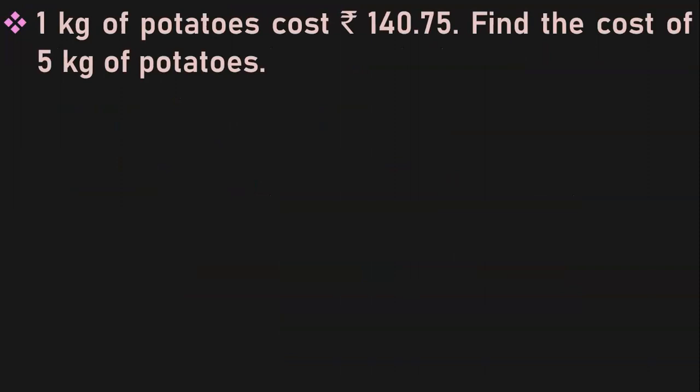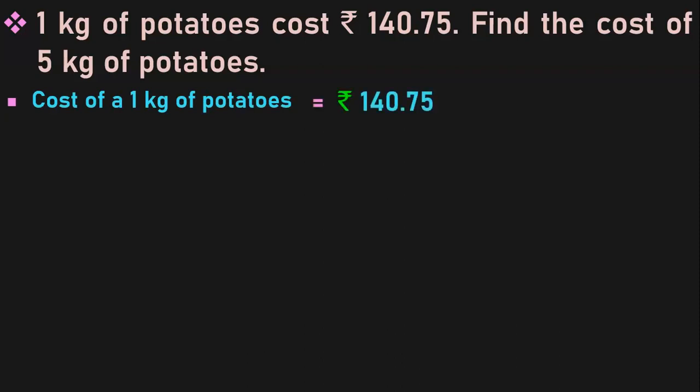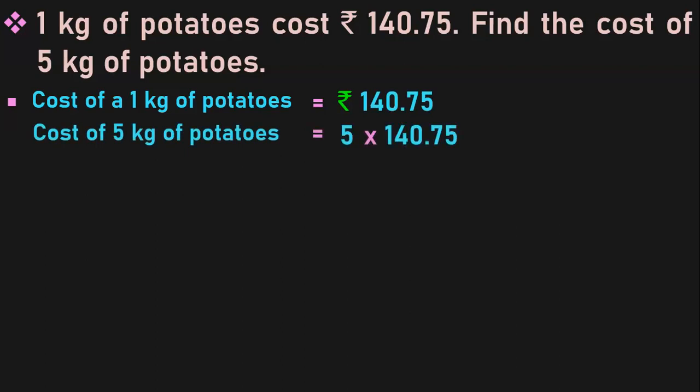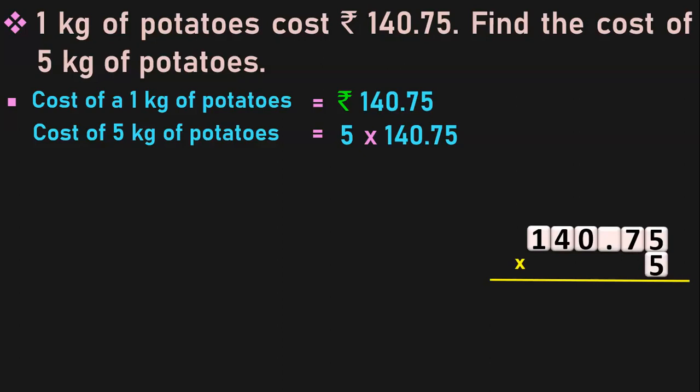Let us do the next sum. 1 kg of potatoes costs rupees 140.75 — that is 140 rupees and 75 paise. Find the cost of 5 kg of potatoes. Cost of 1 kg is rupees 140.75; cost of 5 kg will be 5 into 140.75. As usual in money multiplication, write the money first followed by the multiplier. To do more sums on money multiplication with decimal values, please refer to my video of class 4 multiplication with decimals — link given below in the description box.